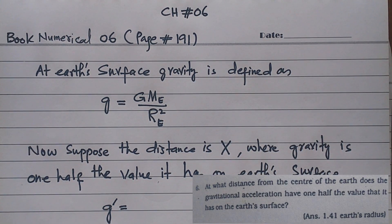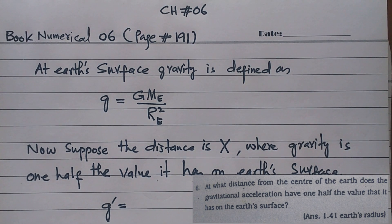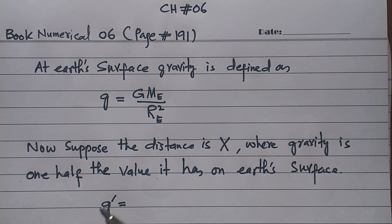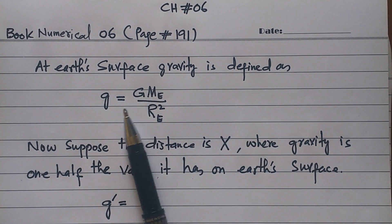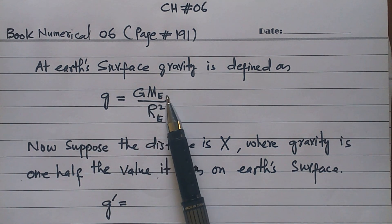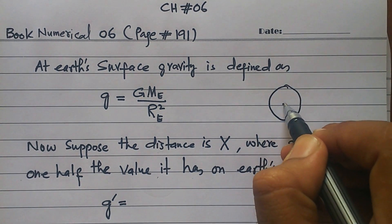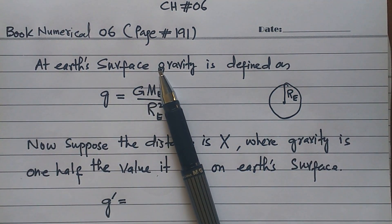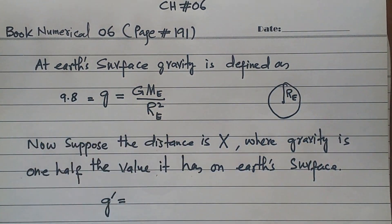In numerical number 6, see what we are doing with it. At what distance from the center of the earth does the gravitational acceleration have one half the value it has on the earth's surface? The gravity at the surface of the earth is given by the formula G M_E upon R_E squared, where the surface value is 9.8 meters per second squared.